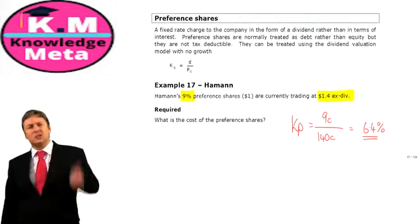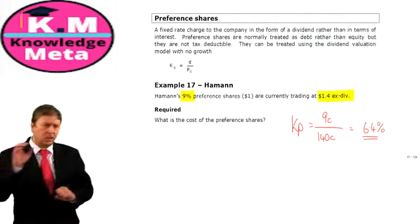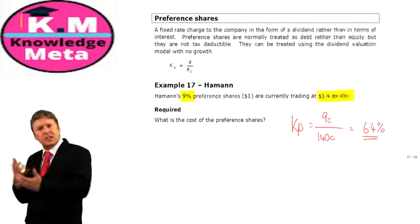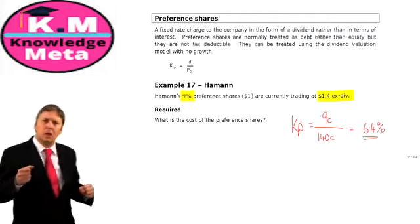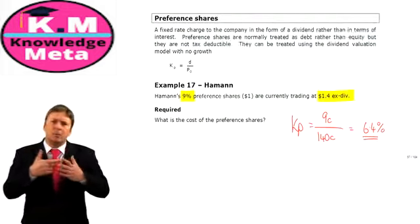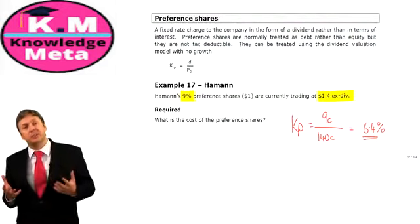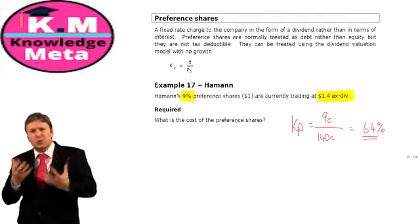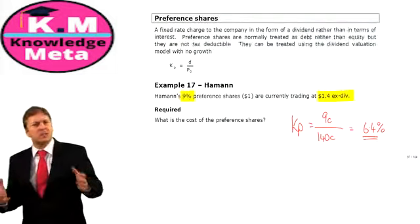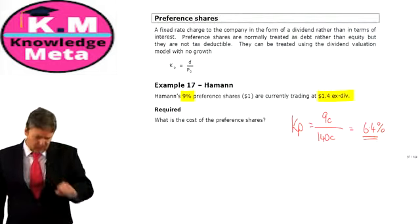So we've now looked at all the components needed for the cost of capital: KE using the dividend valuation model and CAPM; KD covering irredeemable, redeemable, convertible, and bank loans; and KP for preference shares. These are the tools in your toolbox — you need to be able to pull them out and say 'I can do that.' The cost of capital is going to be examined heavily.